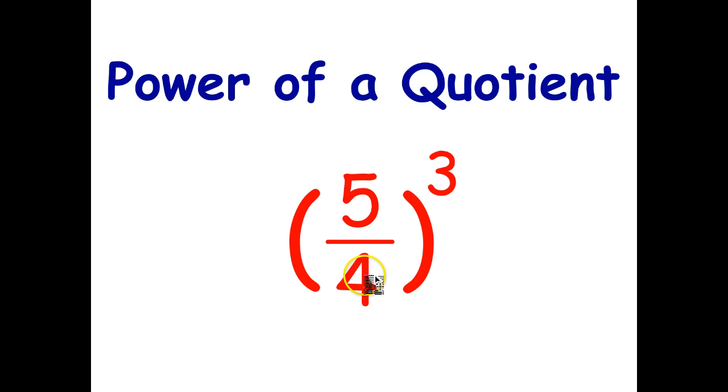So here we have 5 over 4. And we're taking the power, the power of 3 in this case, of the quotient. So this means the third power of 5 on 4.